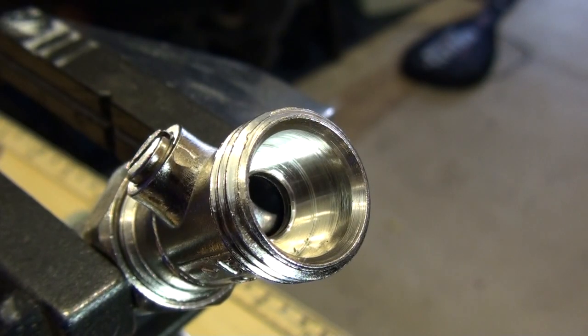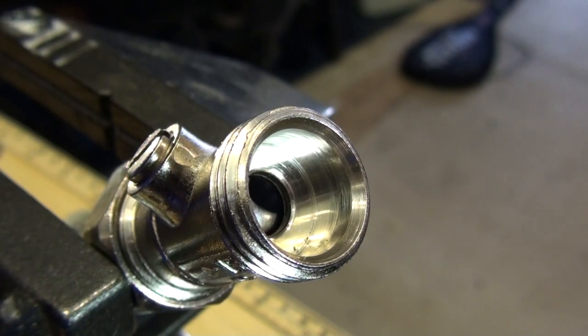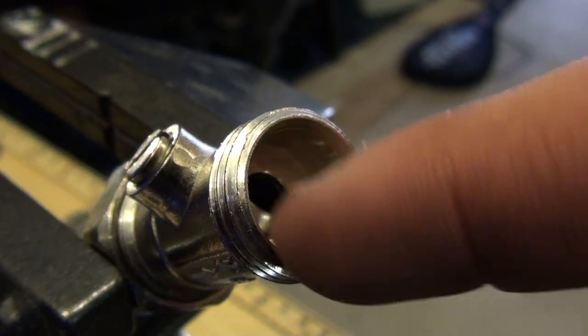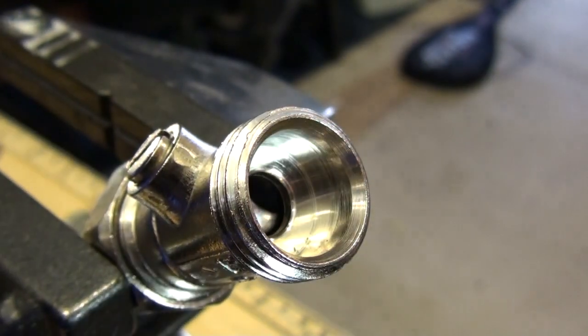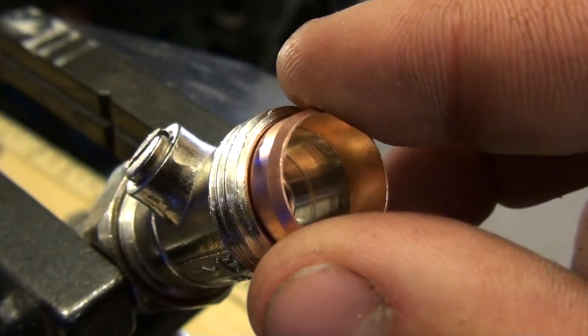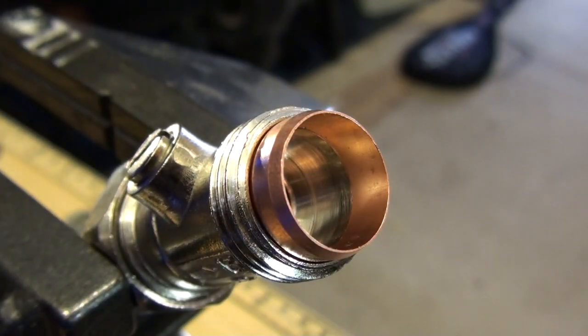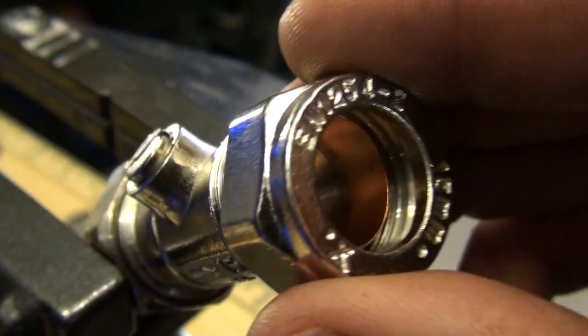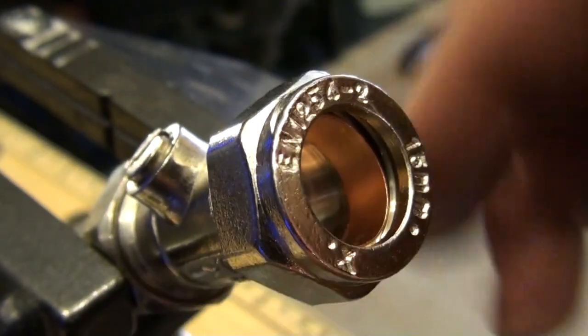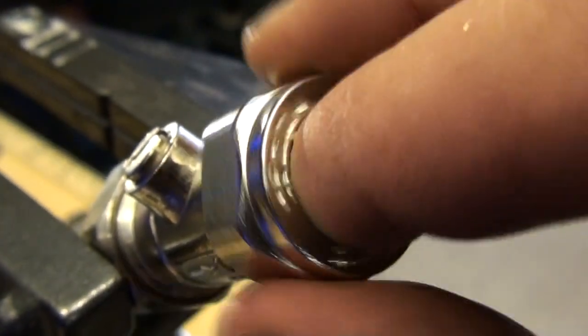Here we are using a 15mm isolation valve with compression ends. The body has a taper into which the olive sits. The tightening nut also has a taper. As the nut is tightened, the two tapers force the olive to bite onto the pipe creating a water tight seal.